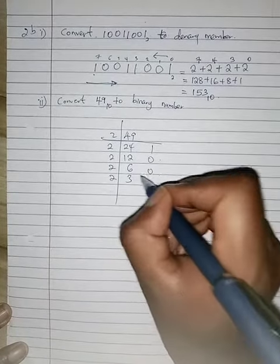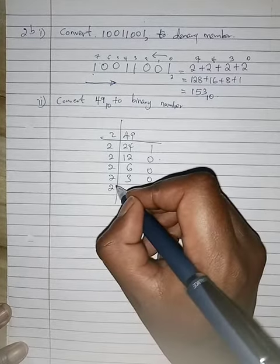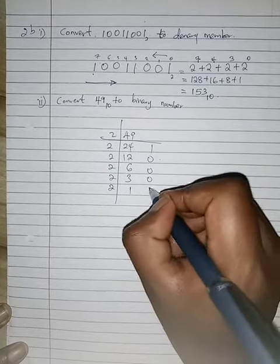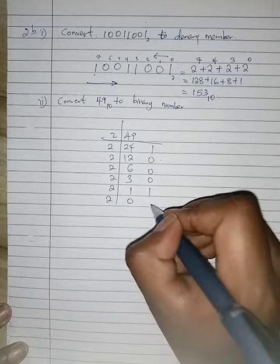3, 0, by 2 again, 1, remainder 1, by 2 again, 0, remainder 1.